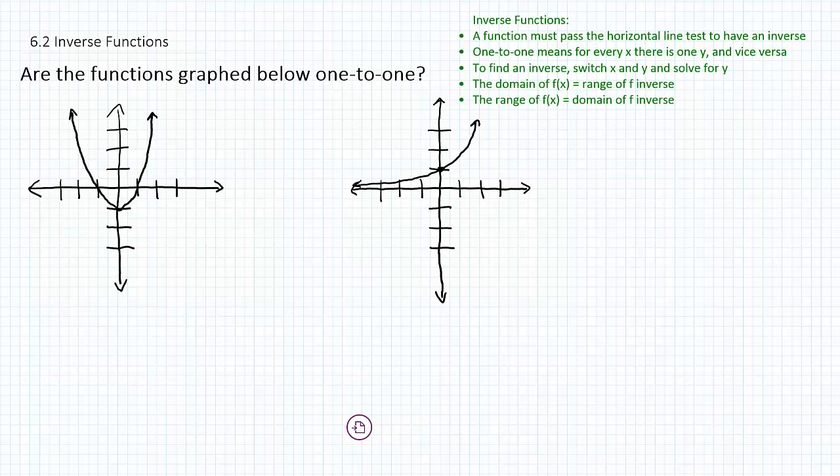In order for a function to be one-to-one, when you run the horizontal line through the graph, you want to make sure that those lines do not intersect the graph in more than one place. If they do, then that would imply that the function is not one-to-one.